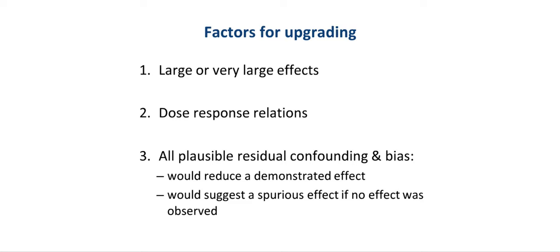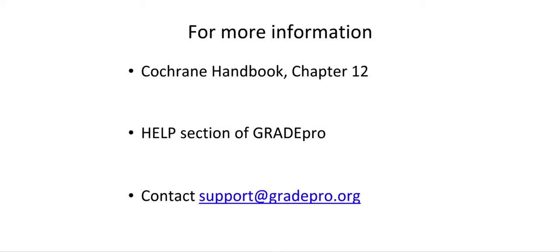In summary, there are three factors for upgrading the quality of evidence: large or very large effects, dose-response relations, or if all plausible residual confounding and biases would either reduce a demonstrated effect or suggest a spurious effect if no effect was observed. This concludes the module on other factors focusing on upgrading the quality of evidence. For more information, please see the Cochrane Handbook Chapter 12, the Help section in the GRADE Profiler or GRADEPro software, or contact us at support@GRADEpro.org.